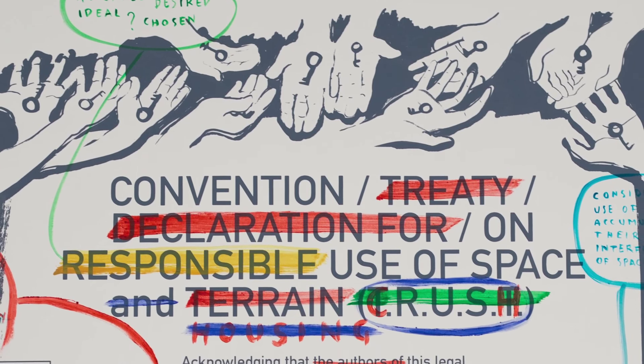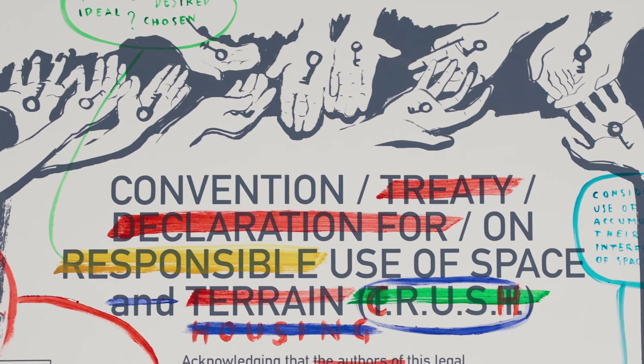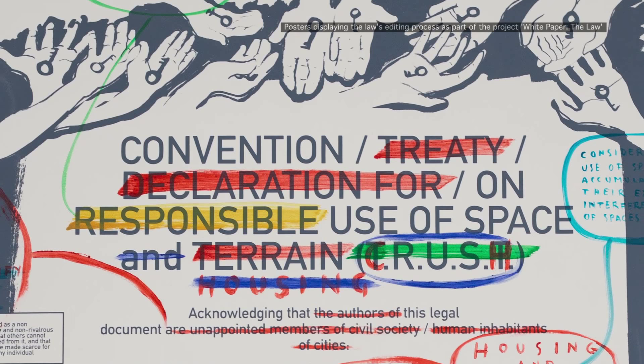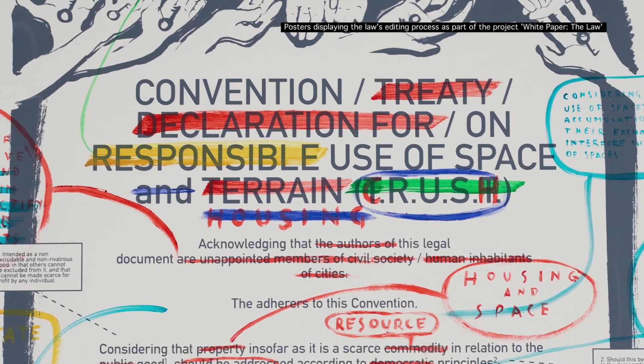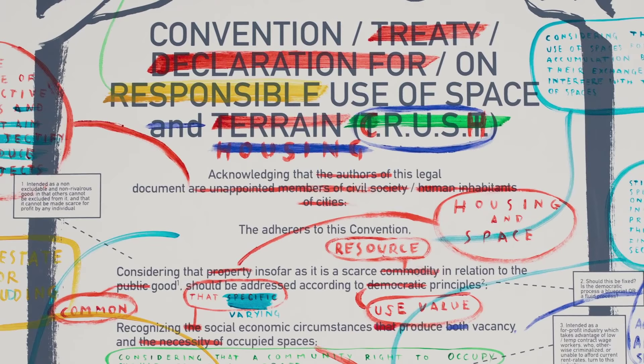The Convention on the Use of Space is a legal instrument drafted between March and May 2015 in the Netherlands, as a response to the lack of affordable homes, absence of provisions for those without legal right to stay, rising rents, and the criminalization of squatting.